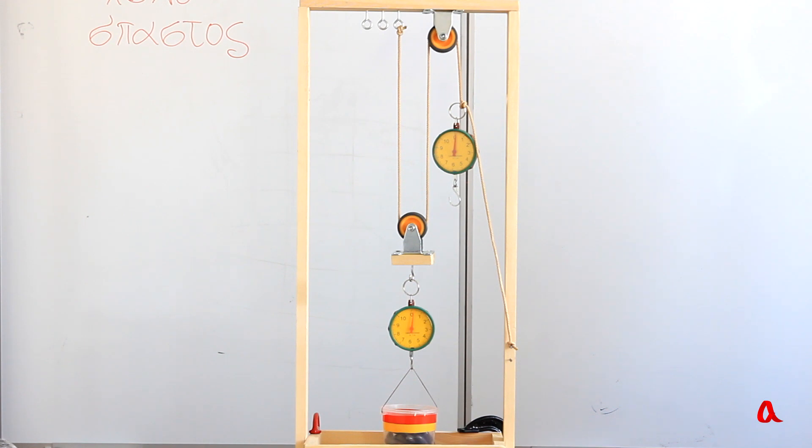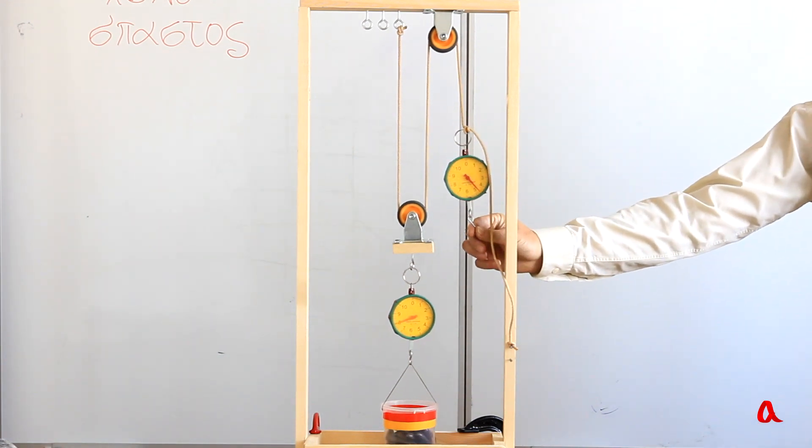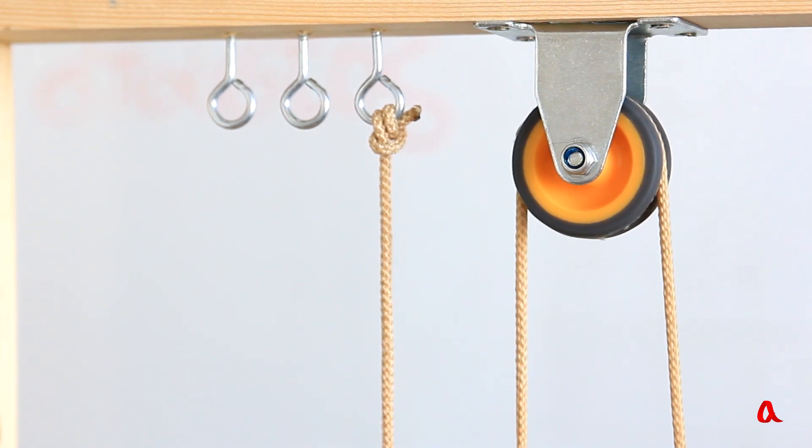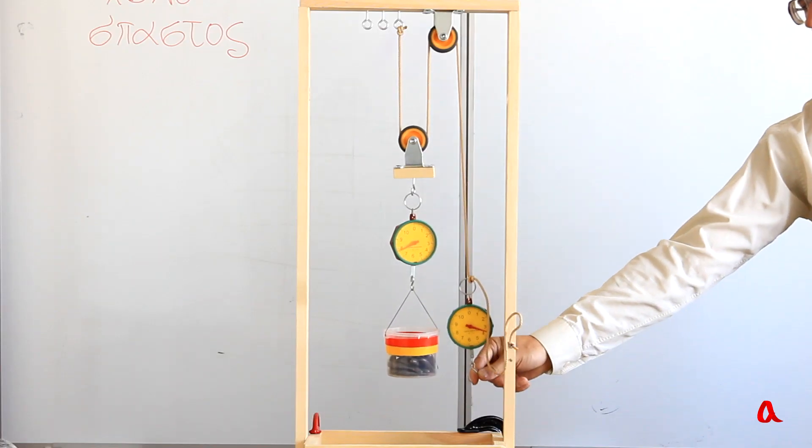Here's the simplest block and tackle construction. It consists of two blocks, the upper and the lower ones. A rope has been threaded through them. We pull at the rope and raise the load. The upper block is fixed. Its purpose is to make the pulling convenient. It provides no mechanical advantage.